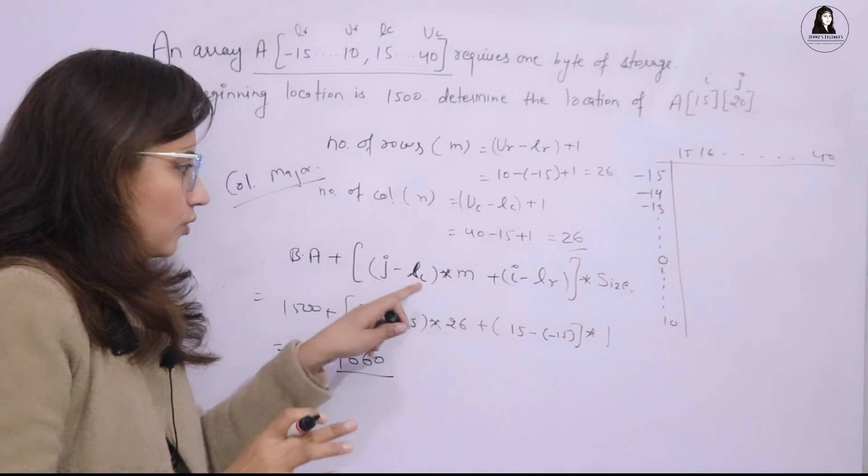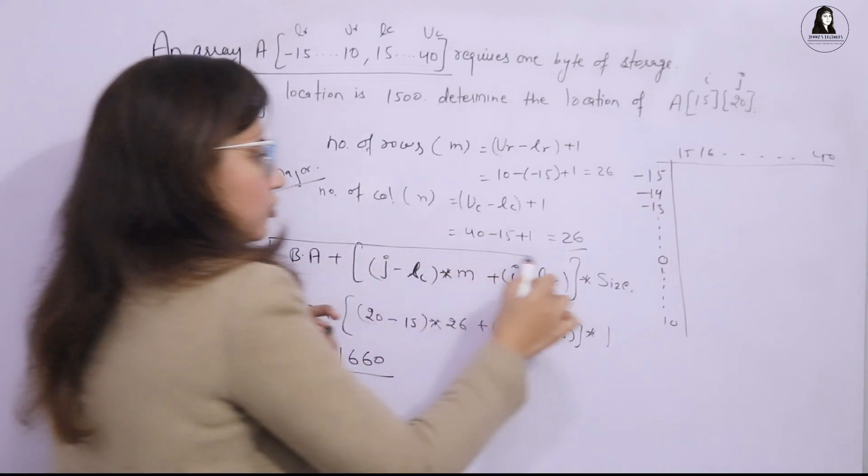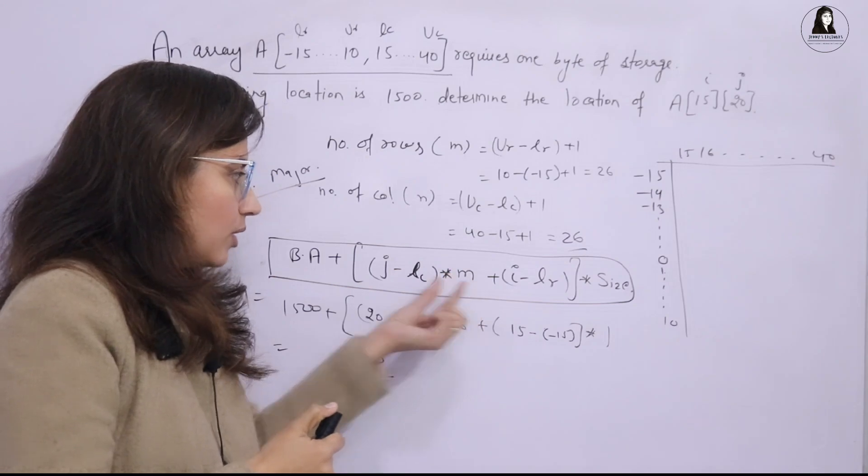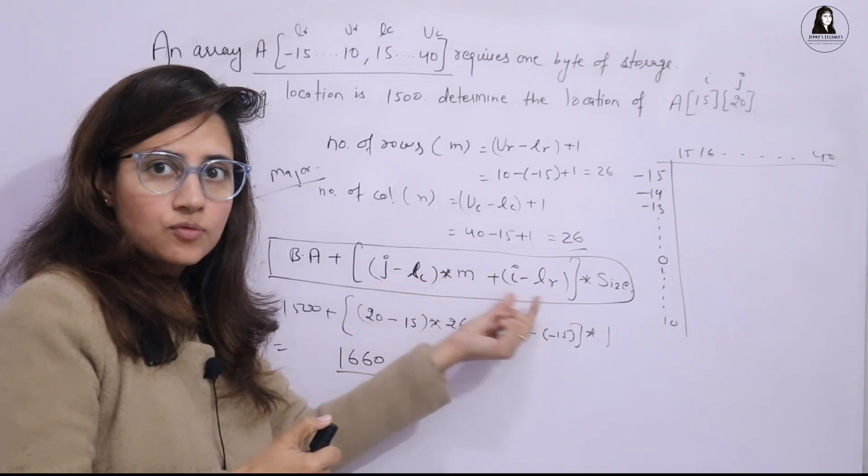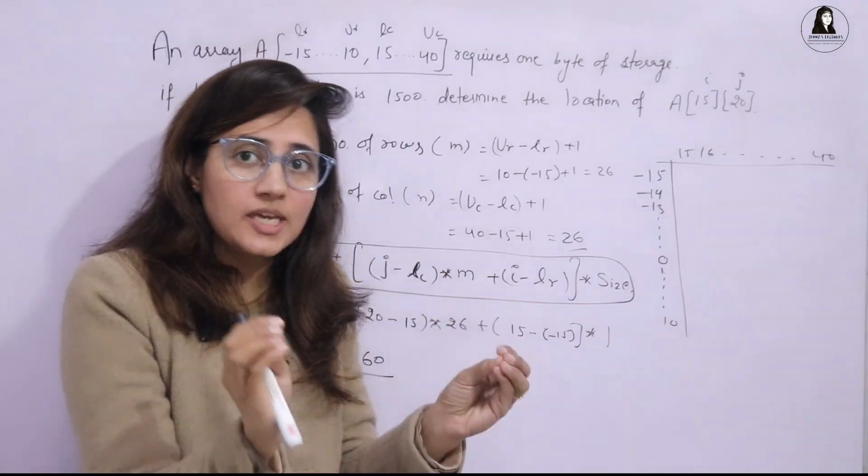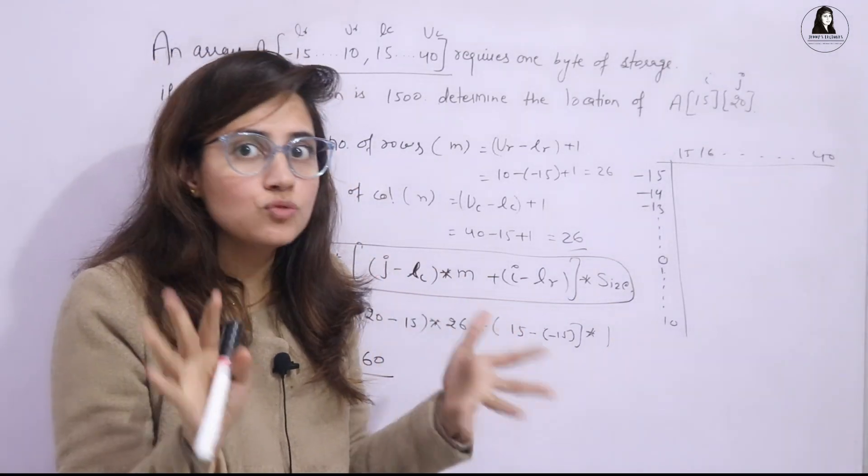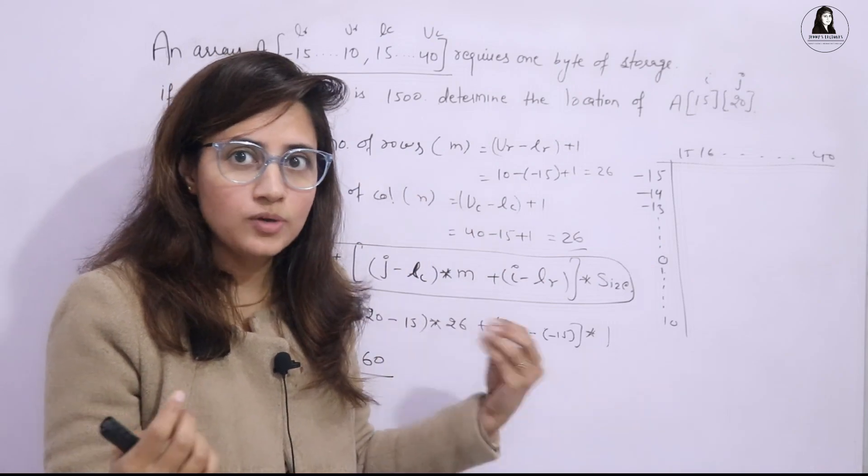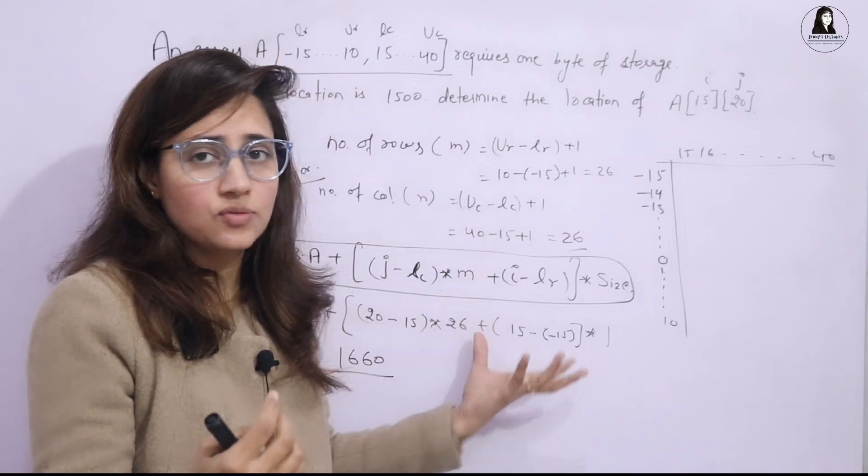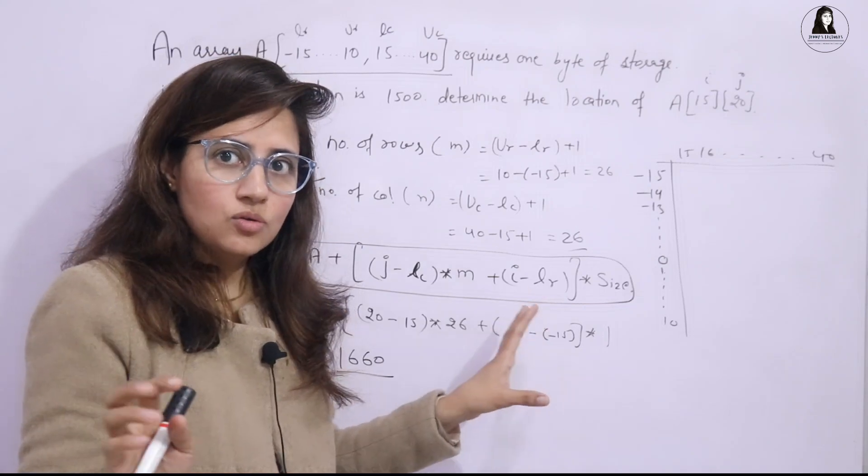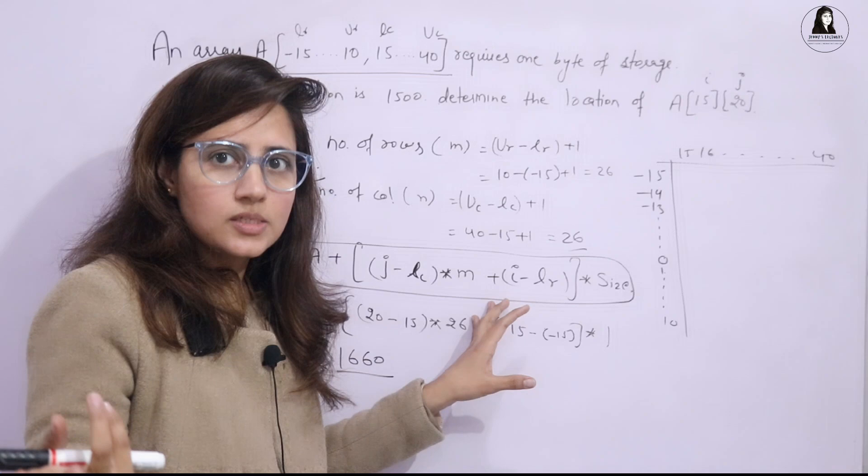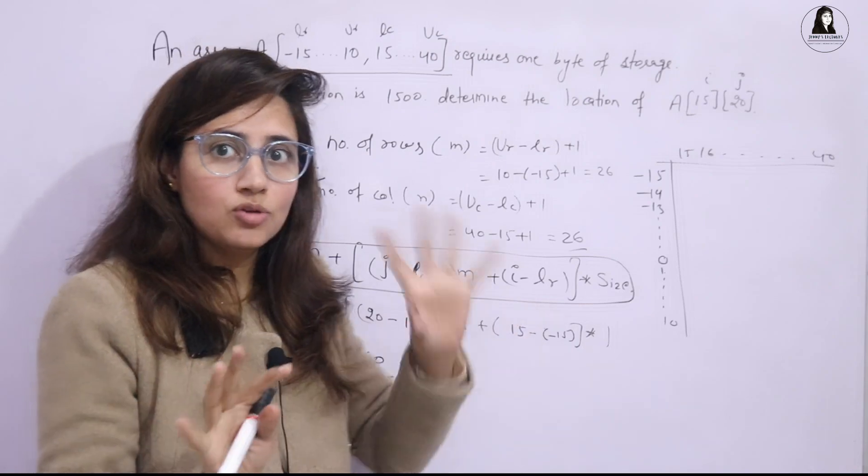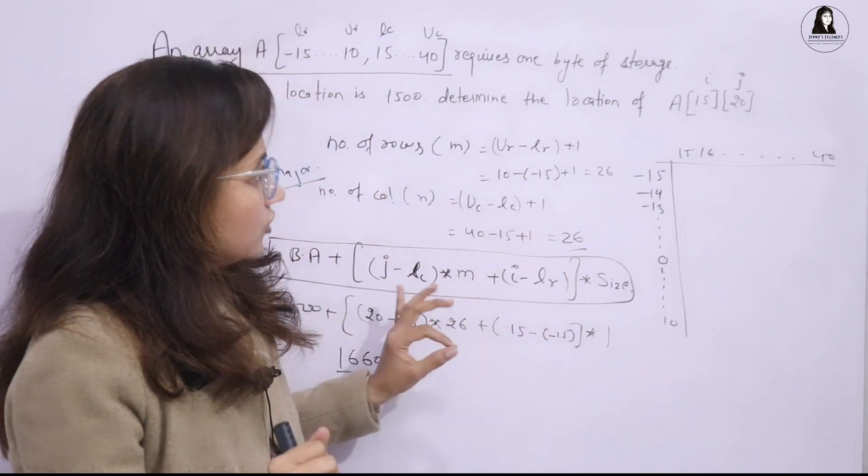I hope you got these two formulas. This is very important. You have to - it's not like that you just cram this is the formula. No. You have to understand why this formula, why J minus LC times M plus I minus LR for column major and all. This thing properly with proper example in detail I have discussed in previous video. Please watch out that video first. Because you have to understand. It would be then in your mind for longer period of time. If you cram, if you just remember, if you just want to learn like this is the formula, you'll forget this thing very easily after some point of time. But if you got it, why this formula, then it would be in your mind I think forever.